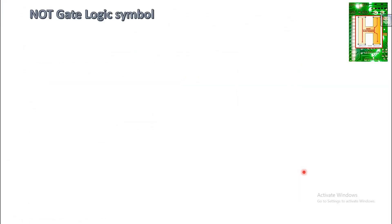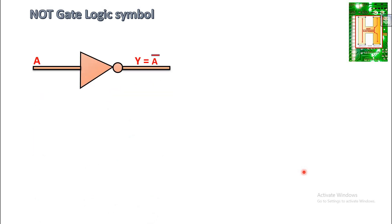The next gate is the NOT gate. The logic symbol shows A as the input and the complement of A as the output. The NOT gate is a special type of gate which has a single input and a single output. It has different names — some call it a complement gate, an inverse gate, or an inverter, because the output of the NOT gate is always opposite to the input.